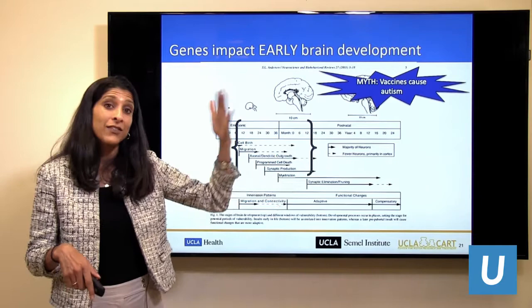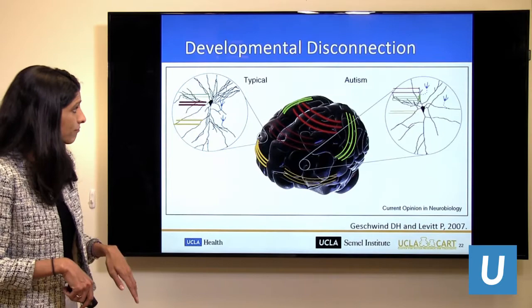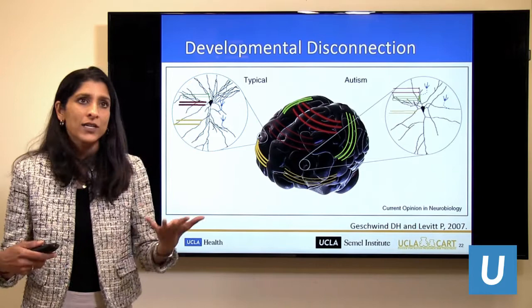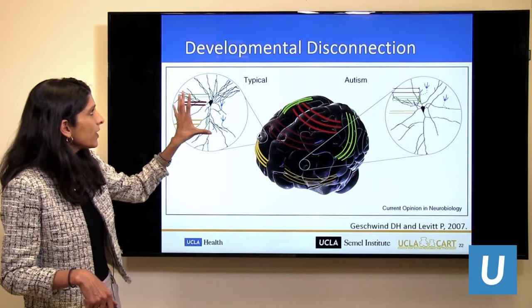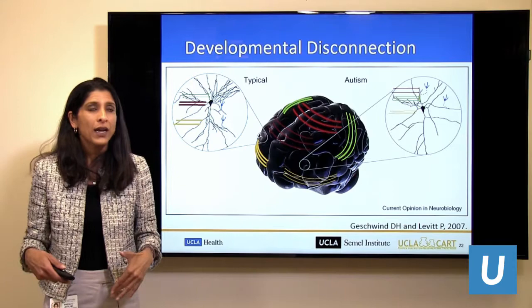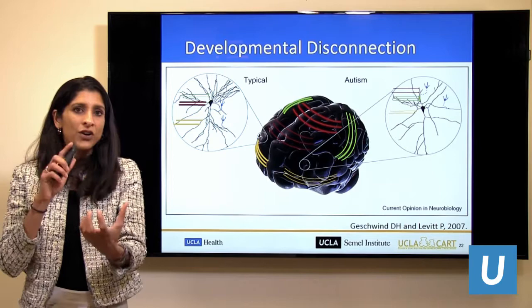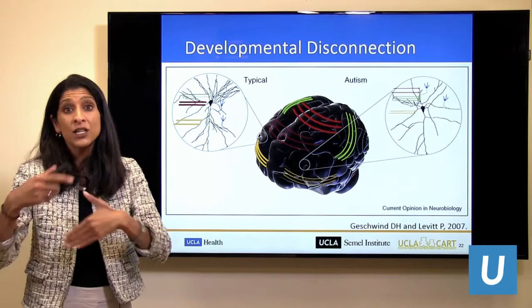Dan Geschwind, who runs our autism center and is a renowned autism genetics researcher, coined the term 'autism is a developmental disconnection' about 10 years ago. It's a really nice way to think about the neurobiology of autism: connections in the brain are not forming in a typical pattern. This is occurring early but continues to occur, and we believe there are ways to modify some of those trajectories with intervention.